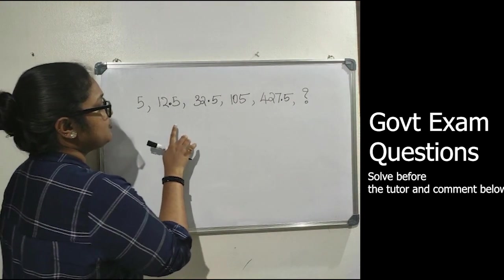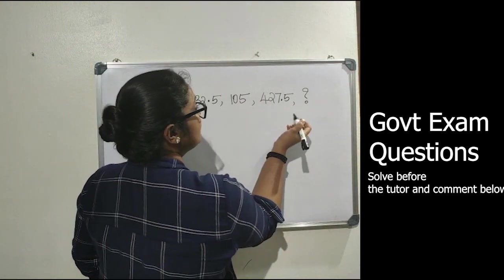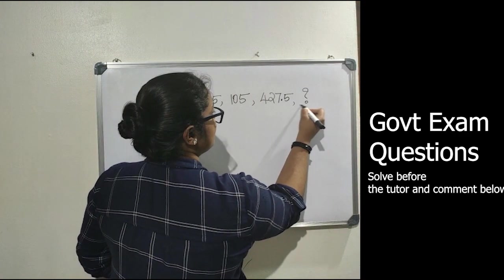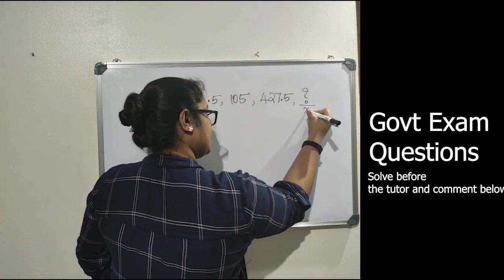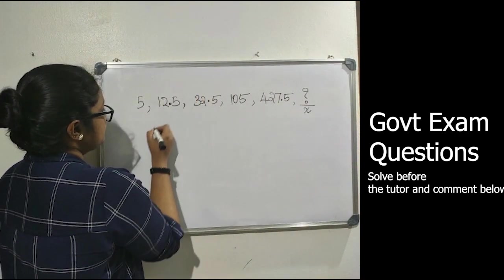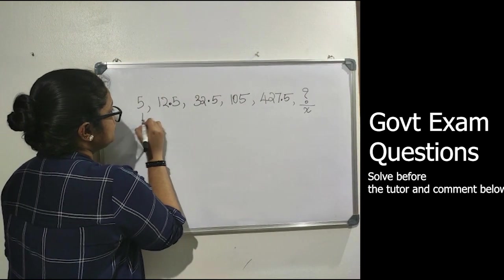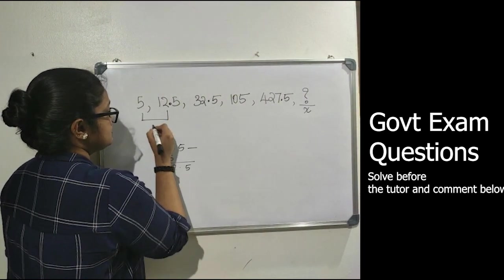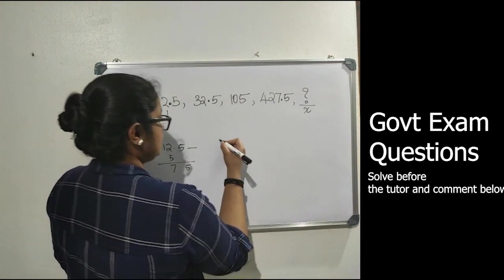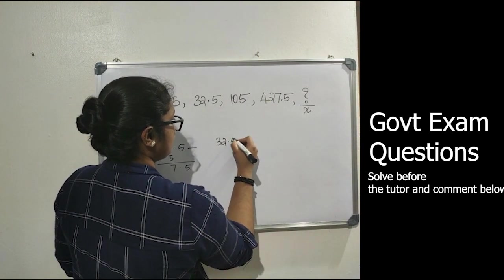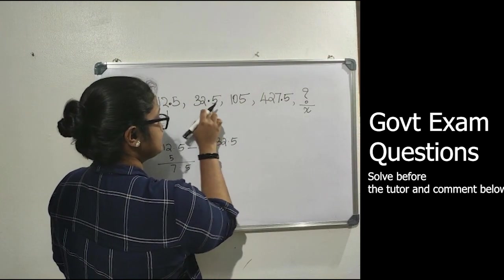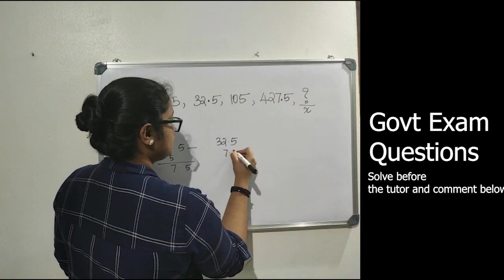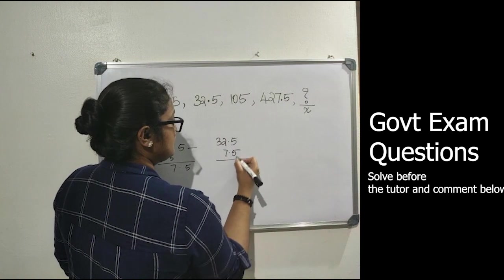The series is 5, 12.5, 32.5, and the last number is missing. Let's take the difference between first two numbers: 12.5 minus 5 equals 7.5. Let's see 32.5, the next number also has a decimal point, so let's subtract 7.5 from this.